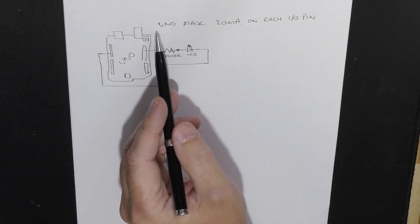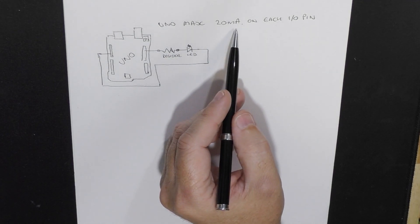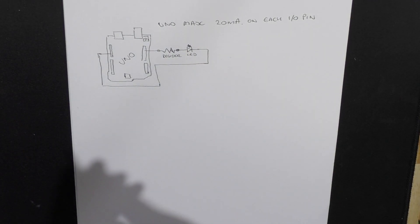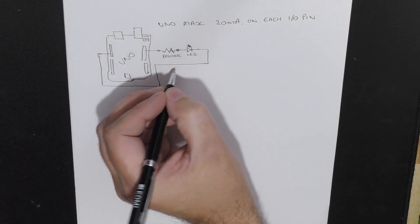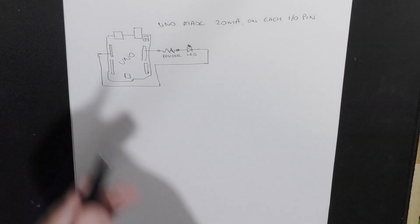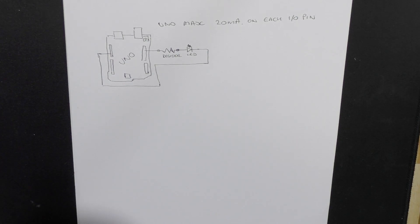So the UNO can have a maximum of 20 milliamps on each IO pin. When sizing a resistor, we need to consider its ohm rating and its watt rating.